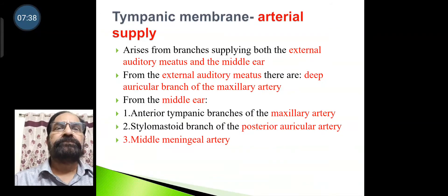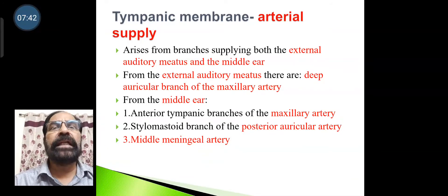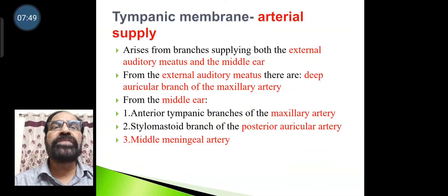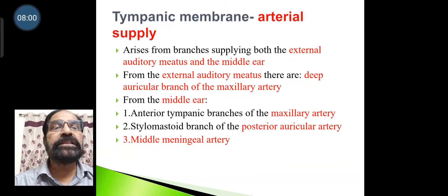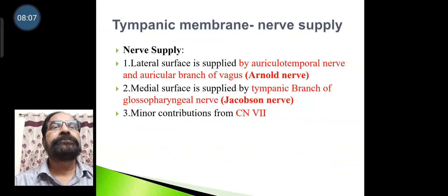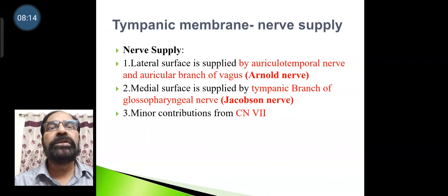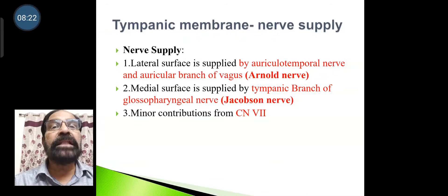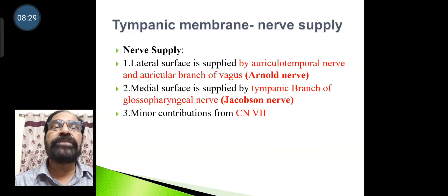Arterial supply of the tympanic membrane arises from branches supplying both the external auditory meatus and the middle ear. From the external auditory meatus, the deep auricular branch of the maxillary artery supplies it. From the middle ear side, the anterior tympanic branches of the maxillary artery, the stylomastoid branch of the posterior auricular artery, and the middle meningeal artery contribute. The lateral surface is innervated by the auriculotemporal nerve and the auricular branch of the vagus (Arnold's nerve). The medial surface is supplied by the tympanic branch of the glossopharyngeal nerve, also called Jacobson's nerve. Minor contributions come from the facial nerve.